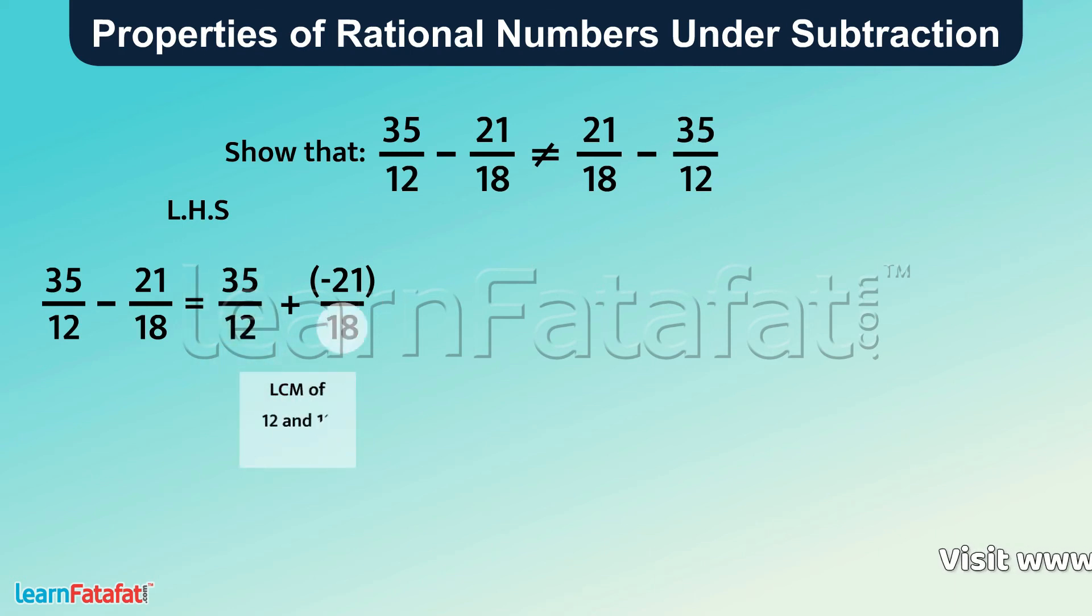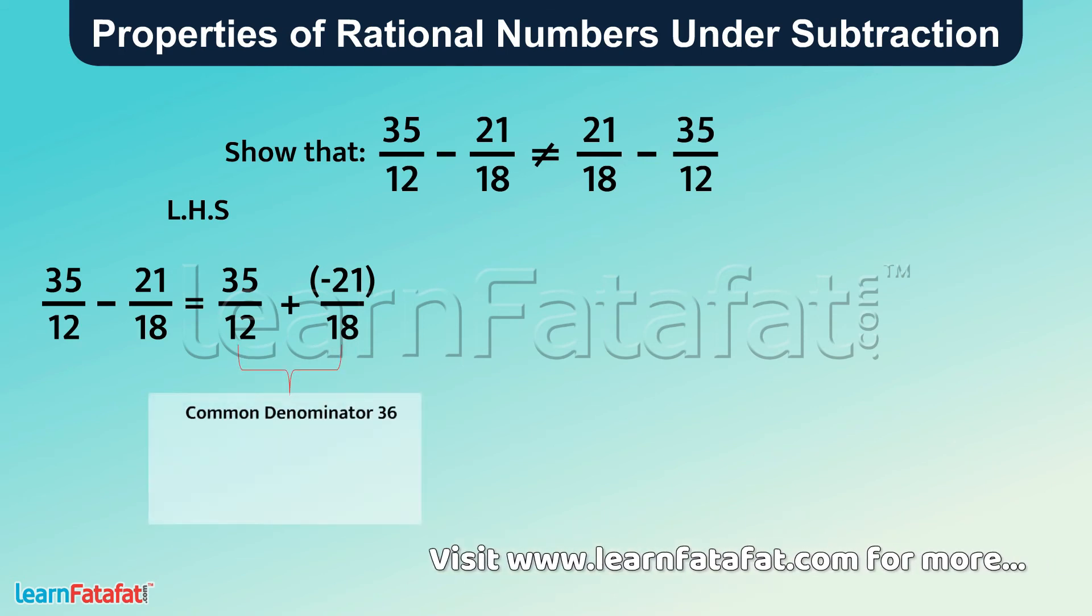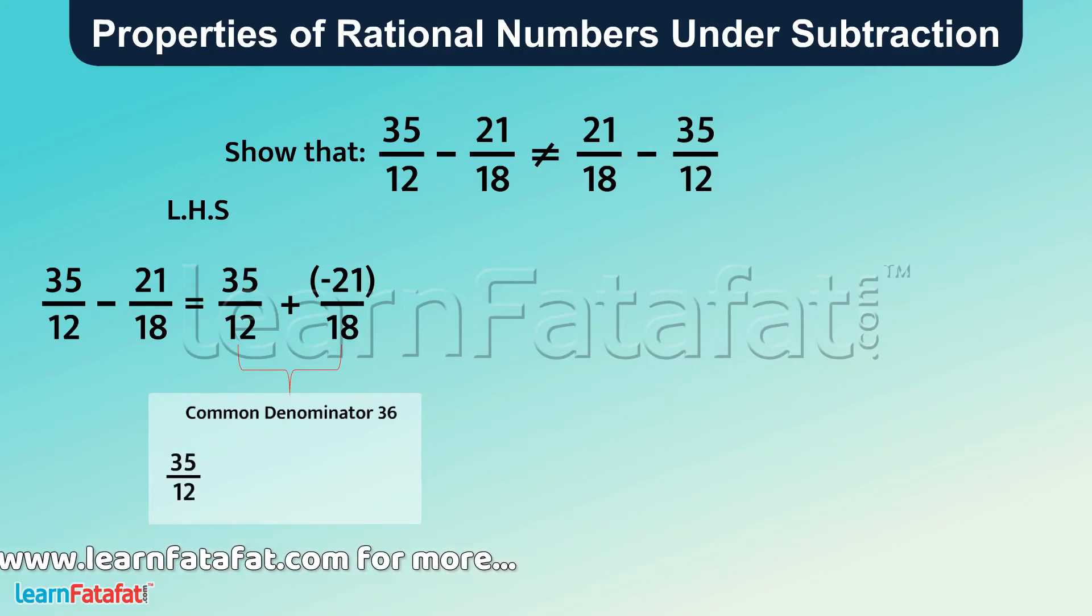LCM of 12 and 18 is 36. So let's make common denominator 36 by multiplying numerator and denominator of 35 by 12 by 3, and numerator and denominator of minus 21 by 18 by 2.